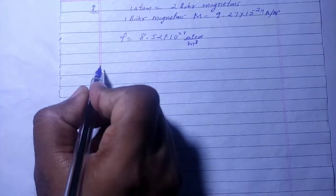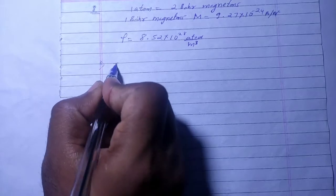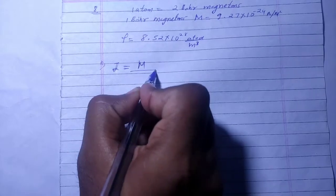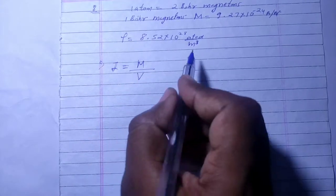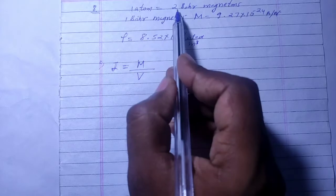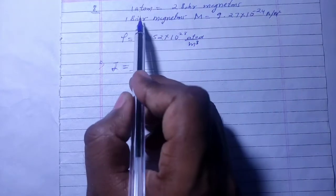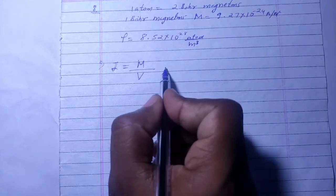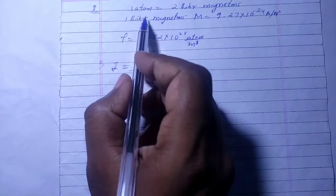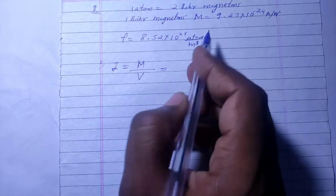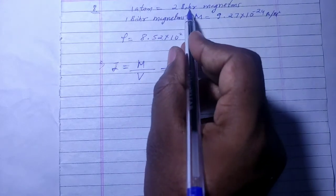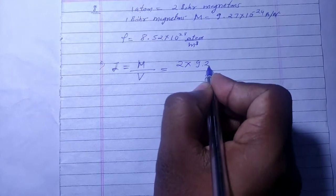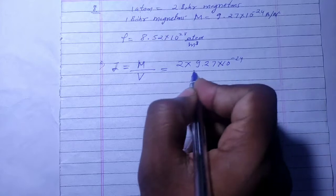So first case, what do we have asked? Magnetization asked, I asked. Now, given I is equal to what? I equals the magnetic moment upon volume, right? Now, one atom is 2 Bohr magnetons. 1 Bohr magneton magnetic moment is 9.27×10^-24. If I have one atom of magnetic moment, how much will it be? Because there are 2 Bohr magnetons, so this atom is 2×9.27×10^-24.